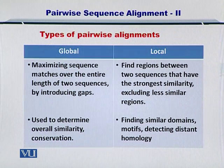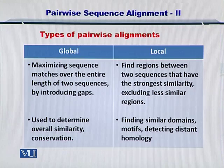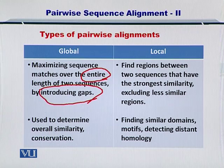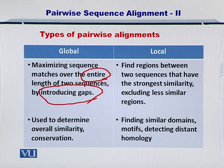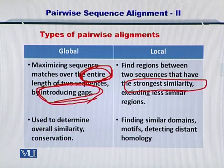Now let's take a look at the types of pairwise sequence alignments. There are two types in general: one is the global and the other is the local pairwise alignment. In the global pairwise alignment, your aim is to maximize the sequence matches over the entire sequence by introducing gaps. In the local pairwise sequence alignment, you only go for the strongest similarity within the sequence — it does not have to be the entire sequence.